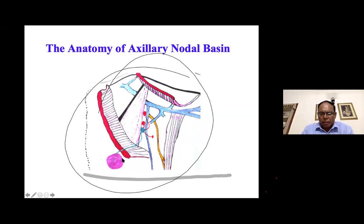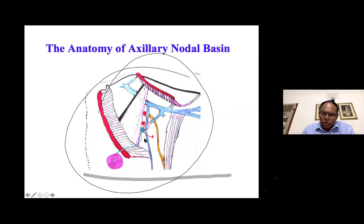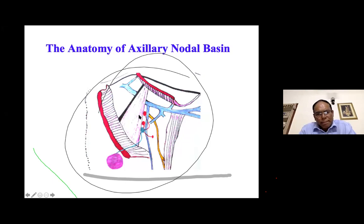Lymphatics drain from lower-order nodes to middle-order to highest-order nodes — lowest echelon, second echelon, highest echelon. About 98% of the nodes first involved in breast cancer are located just lateral to the pectoral muscles and medial to the lateral thoracic vein. This long vein passing vertically across the axilla is the lateral thoracic vein. So 98% of first-involved nodes are between the pectoral muscle and lateral thoracic vein.